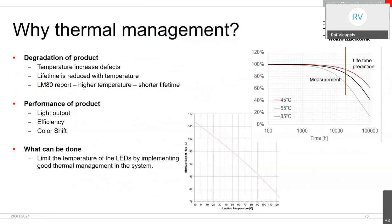Why is thermal management needed? There are two important reasons: lifetime and performance. For lifetime, the key concern is degradation — light output degrades over time, and higher temperature accelerates this. Comparing operation at 45, 55, and 85 degrees junction temperature, higher temperature means shorter lifetime. If you want to maintain 90% of initial intensity for 20,000 hours, the application must run at approximately 45 degrees maximum. For white LEDs, LM80 data can be used for lifetime prediction.